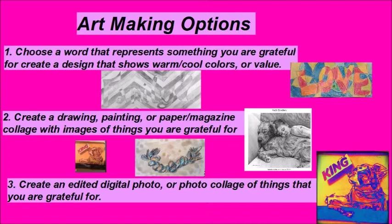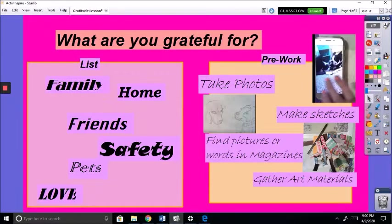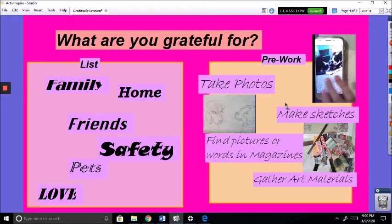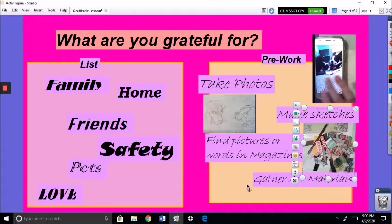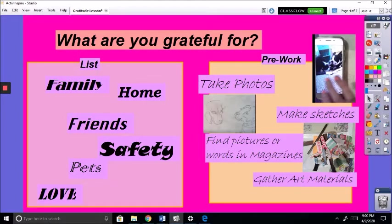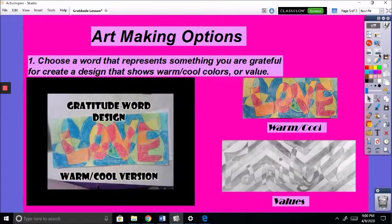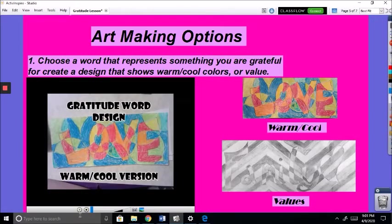So back to that pre-work I mentioned. If you're doing option one, you're not going to have a whole lot of pre-work. But if you're doing options two or three, you may need to take some photos, make some sketches, find some pictures or words in magazines, and then gather the materials that you need — which you'll have to do for option one also. Option one is our word design. There's the warm-cool version and there's also the value version.